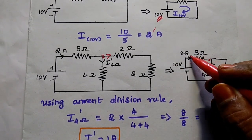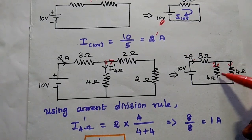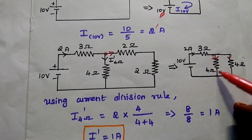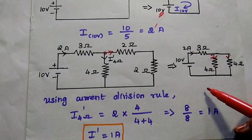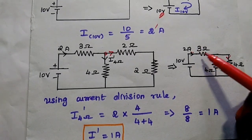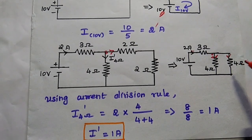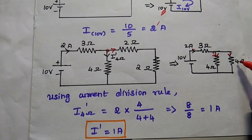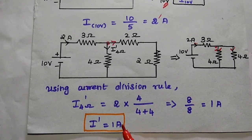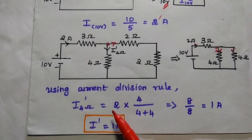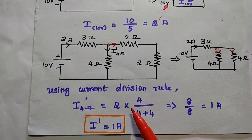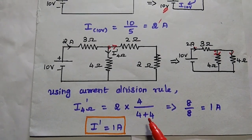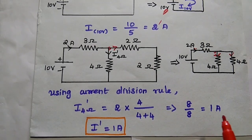Now, the 2 ampere is getting divided between these two branches. Using the current division rule to find the current through this 4 ohm: the formula takes the total current (2 ampere) multiplied by the opposite resistance value. So I dash = 2 × 4 / (4 + 4) = 1 ampere.